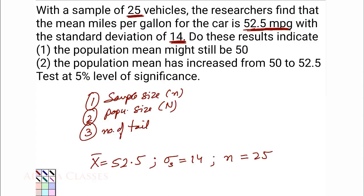Do these results indicate that the population mean might still be 50? So they are saying population mean is 50. In the first question they are asking if it still might be 50. In the second question they are saying the population mean has increased from 50 to 52.5. So there are two questions: first, population mean is still 50; second, population mean has increased from 50 to 52.5.